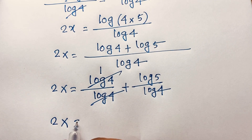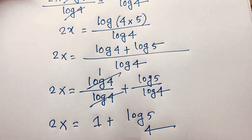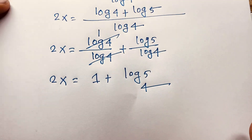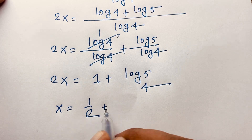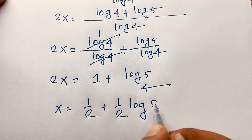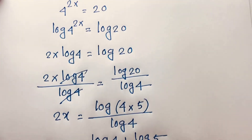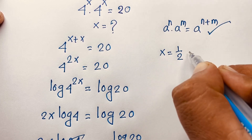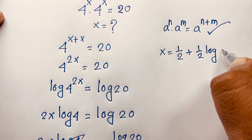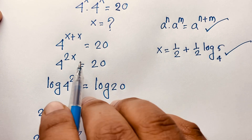Then we find out 2x is equal to 1 plus log 5 base 4. So x is equal to 1 over 2 plus 1 over 2 times log 5 base 4. This is the value of x in this exponential expression.